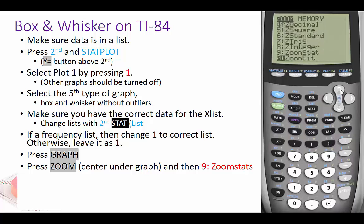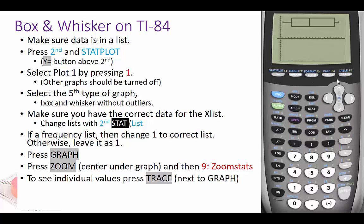Once you hit that nine, it'll fit, and then you can hit trace right there next to the graph, and you can go through and see the different values that we have for the box and whisker plot. There's your five number summary.